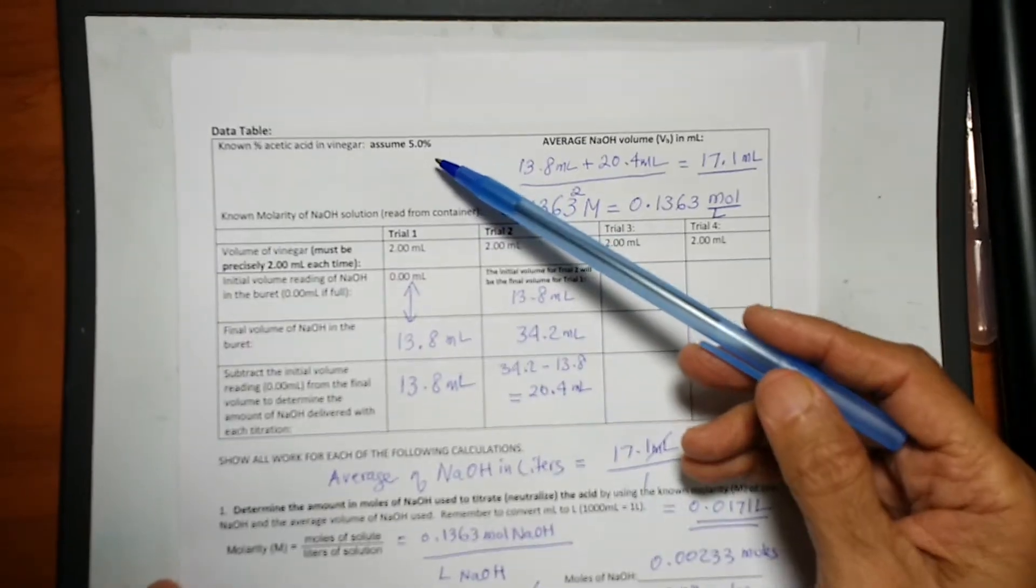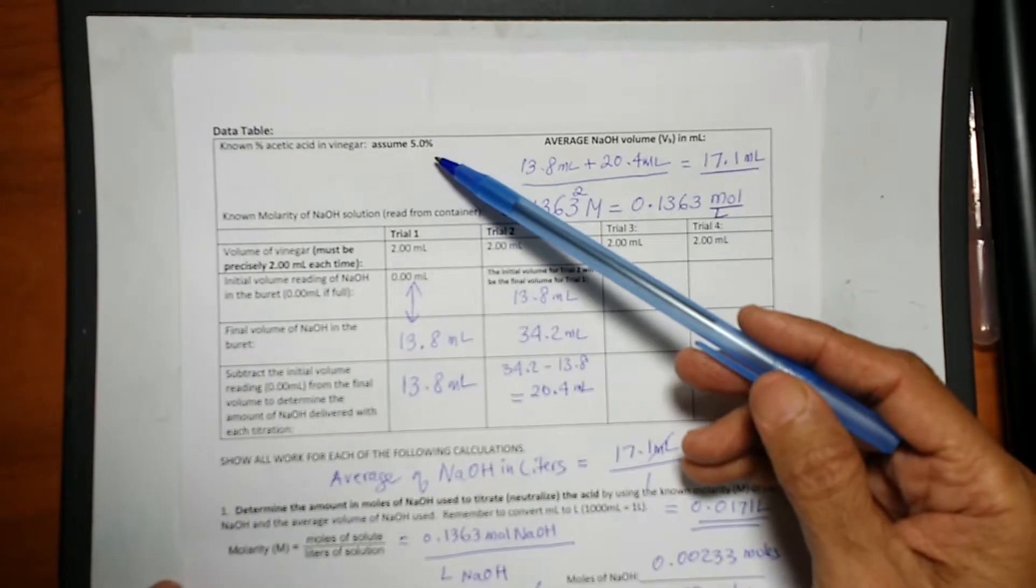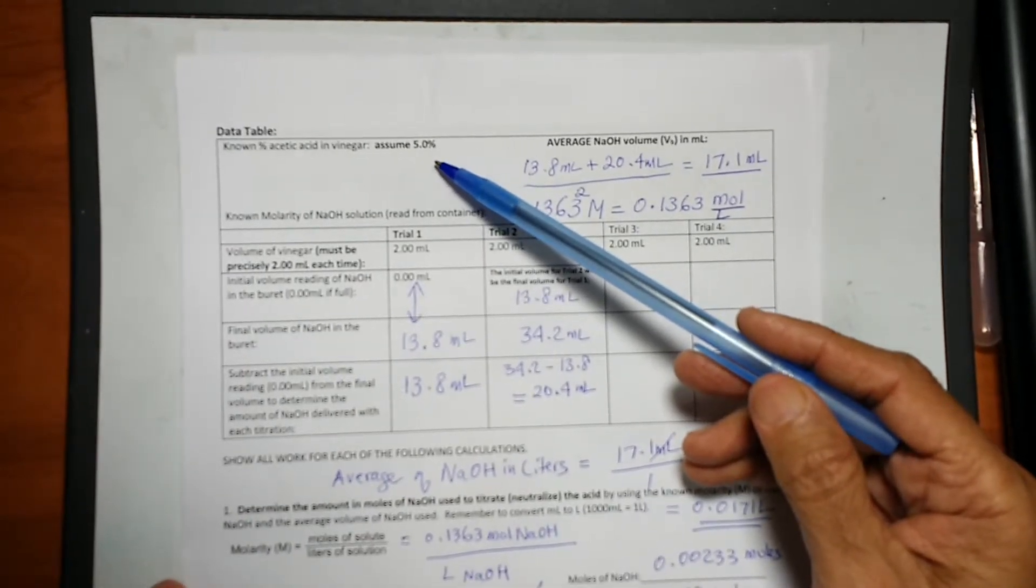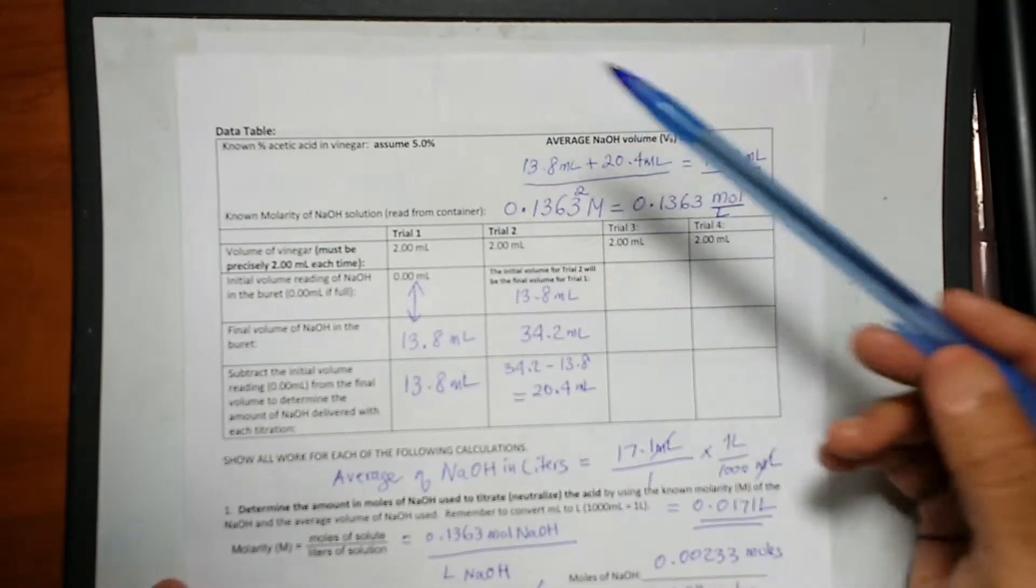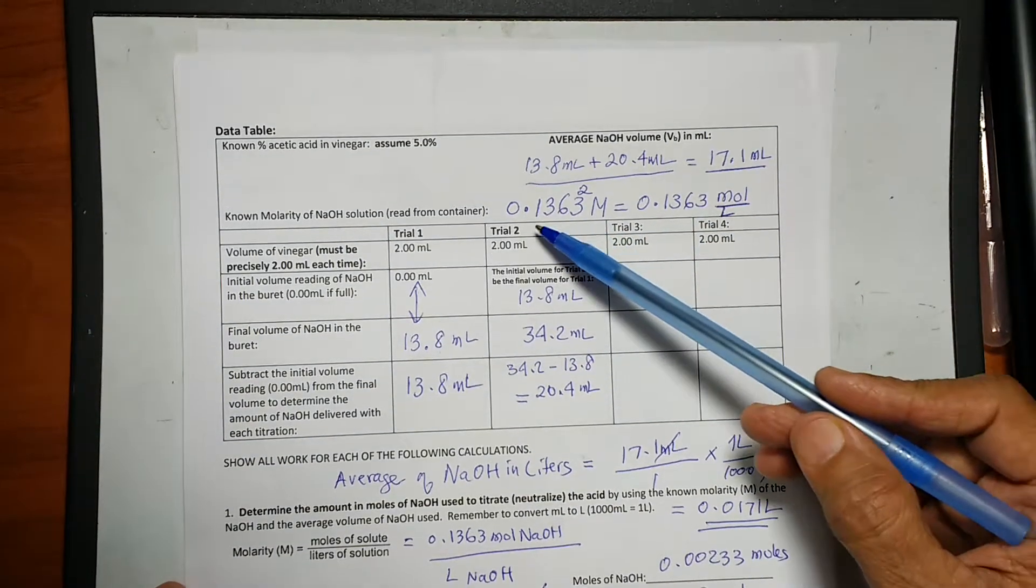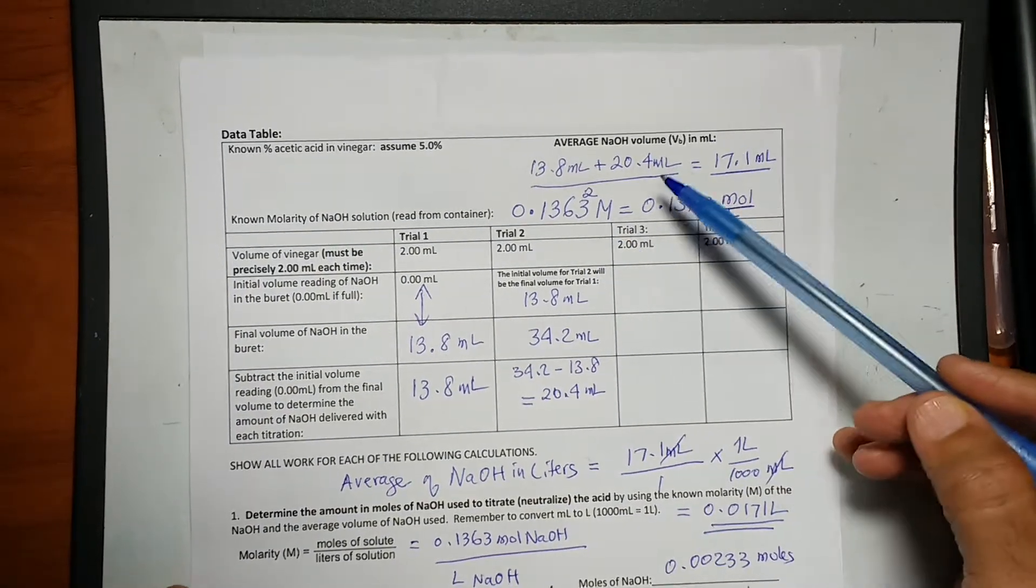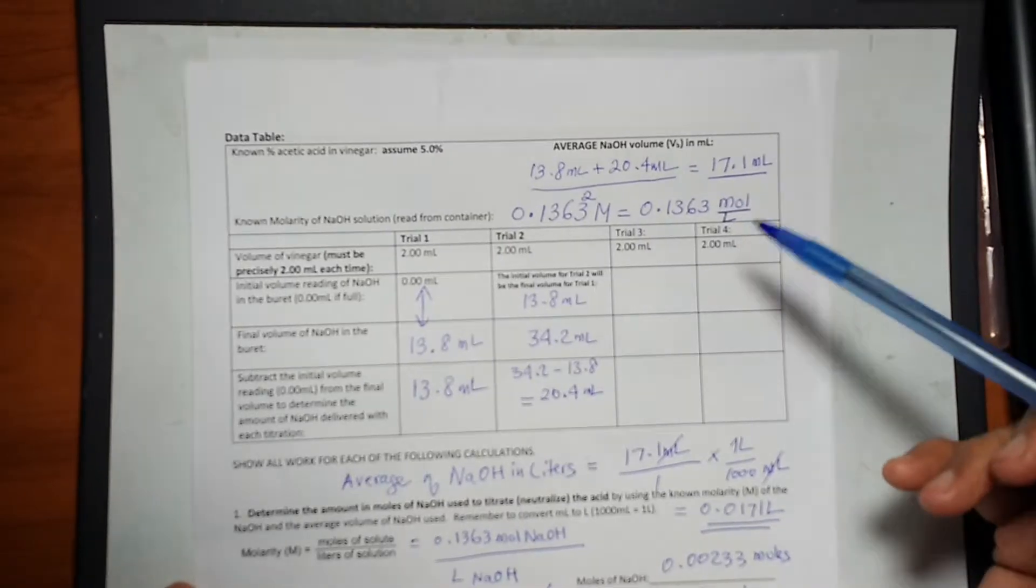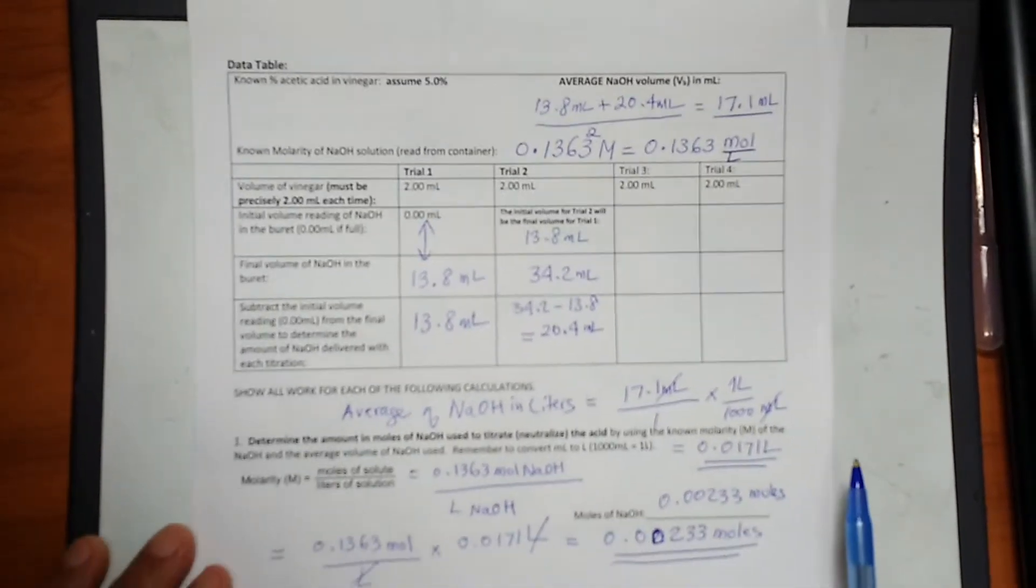The theoretical value for the mass over volume percentage of vinegar acetic acid is 5%. The molarity of sodium hydroxide is 0.1363 molar, molar per liter, and we will do the calculations together.